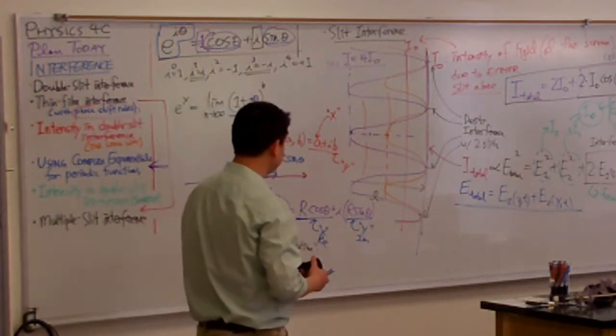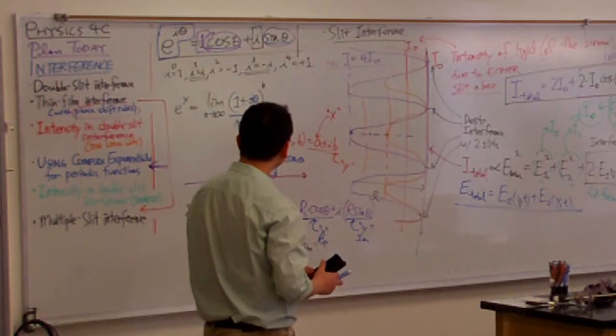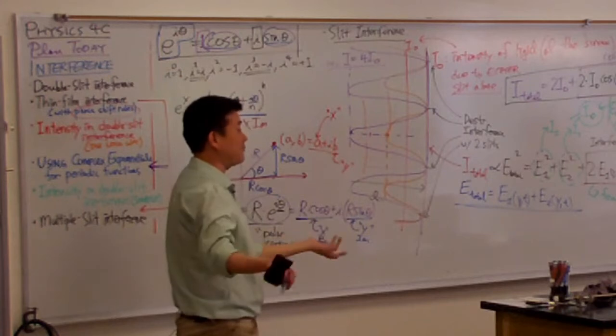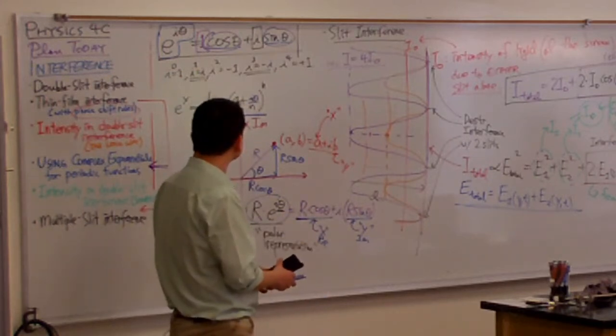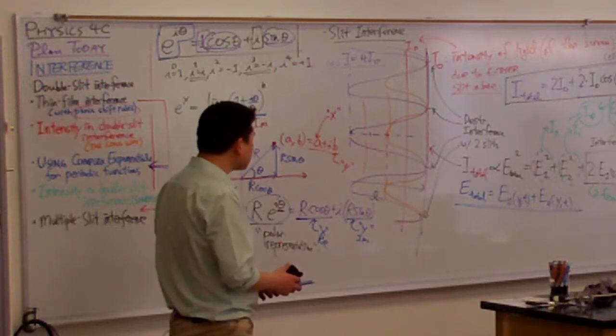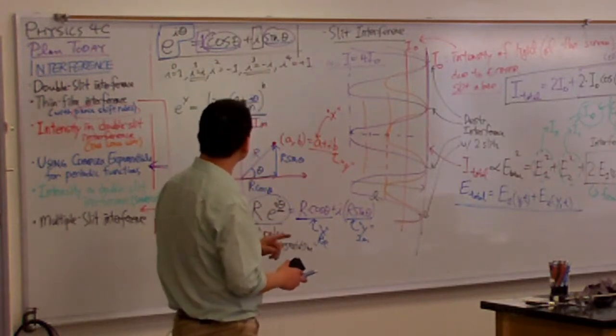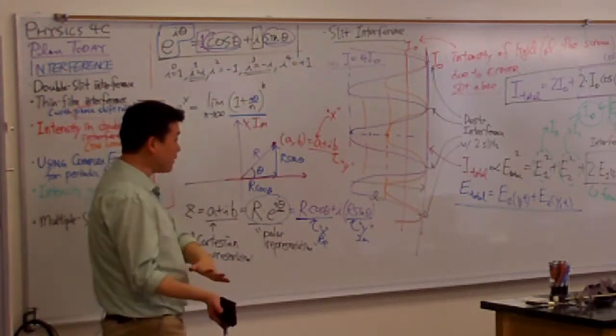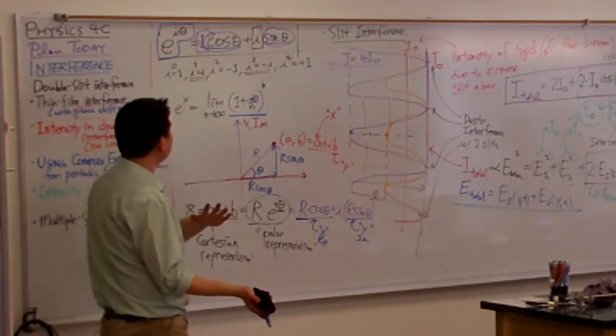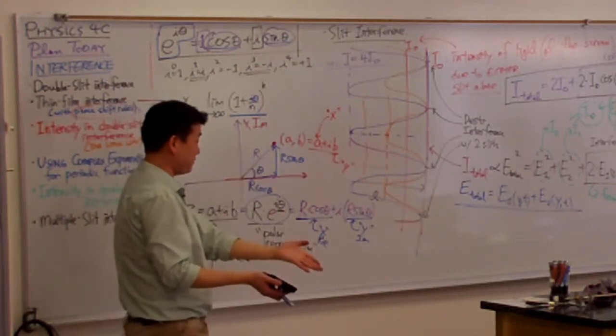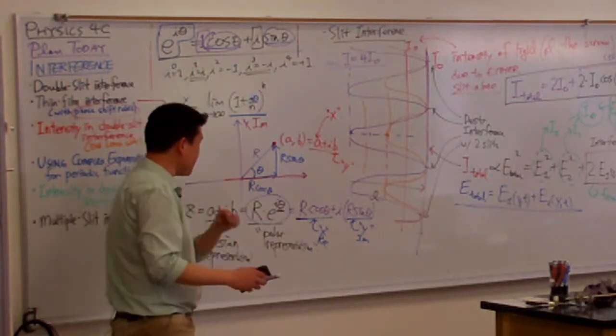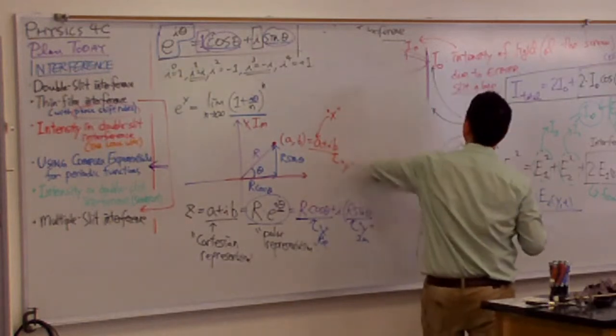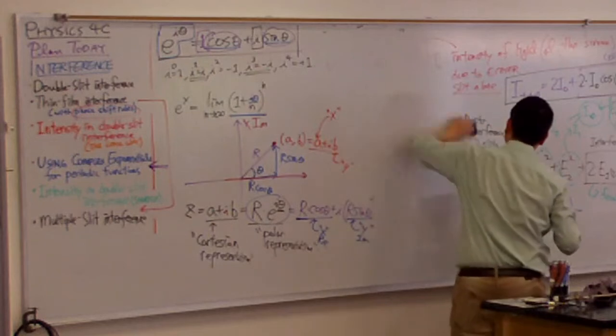Does that imply that e to the i theta is never going to be bigger than one? No, theta can be anything, because theta wraps around, right? Sine theta, like theta can be a million. But e to the i theta, that gets capped, right? So you want to be able to say this. You want to be able to say, when I have e to the i theta, that it defines a unit circle. That somehow when you square it, it's never going to be, it's going to be actually exactly one. That's what you want to say, right? That's a good intuition. So that's what we want to do. Let me just point out the slight difficulty that you run into, and we will find a way around it.